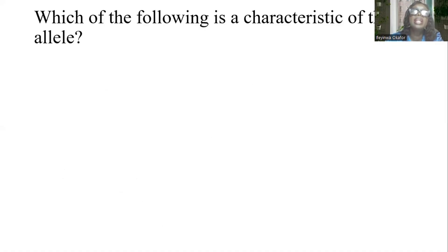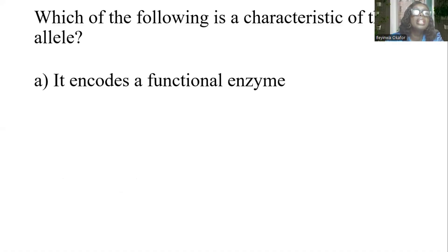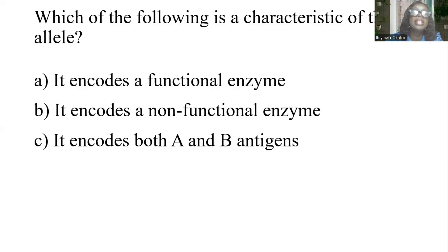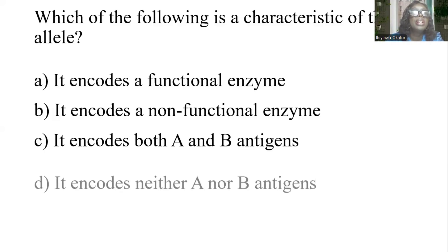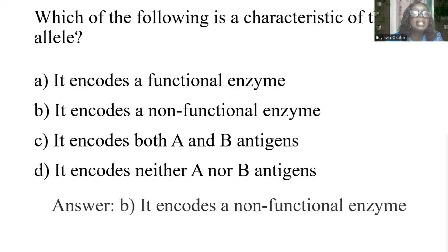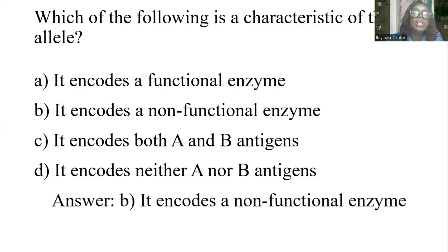Which of the following is a characteristic of the O allele? A) It encodes a functional enzyme. B) It encodes a non-functional enzyme. C) It encodes both A and B antigens. D) It encodes neither A nor B antigens. The answer is B: it encodes a non-functional enzyme.